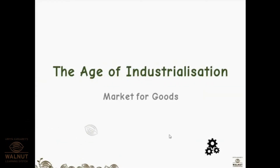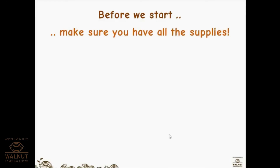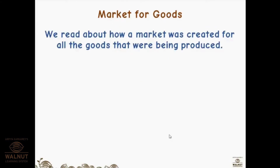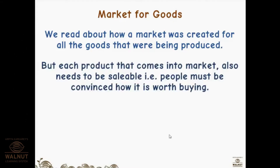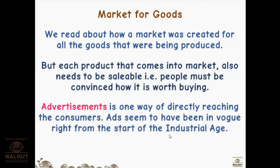Today we are going to learn about the Age of Industrialization — this is the last sub-PPT. It covers markets for goods. The British set up factories and produced goods. We will read about how a market was created for those goods. Each product that comes to market needs to be sold — people must be convinced it is worth buying. This was done with the help of advertisement, which is one way of directly reaching consumers, and has been in vogue right from the start of the industrial age.